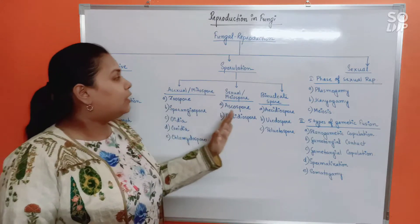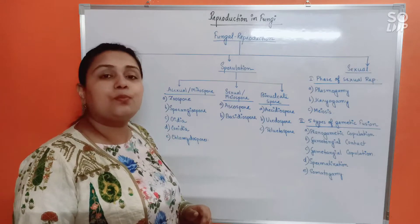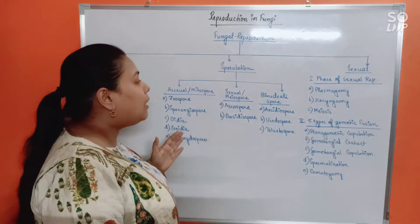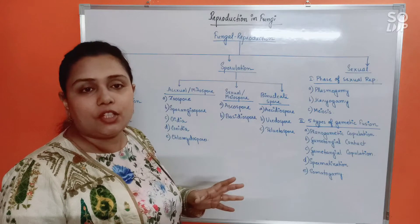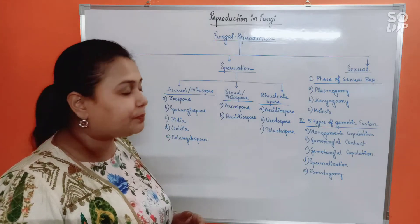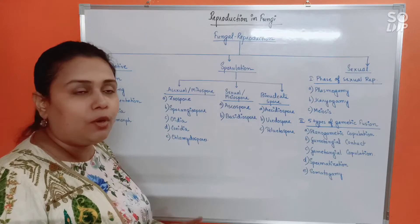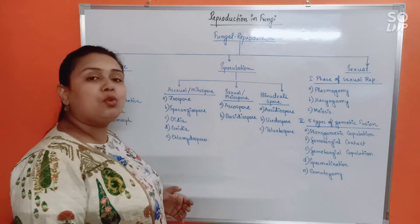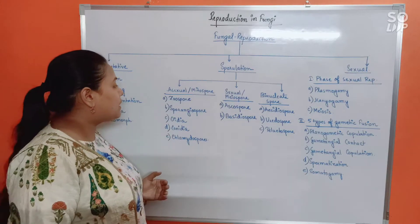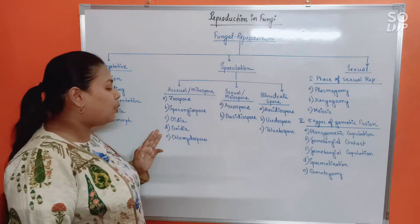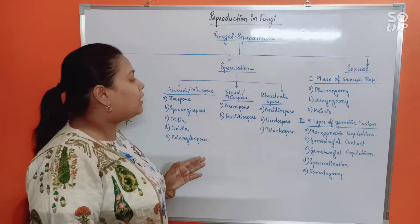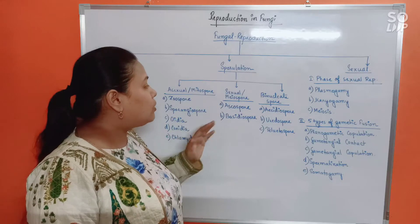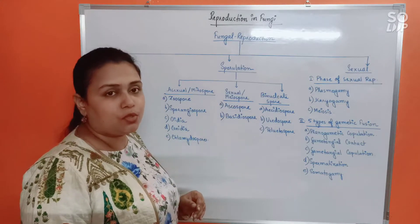The next category is sporulation or spore formation. Spore formation is the main category of reproduction in fungi, and it can be of three types because three different types of spores are born in fungi. One category is asexual spores or mitospores — spores formed by mitosis. Under asexual spores we will discuss zoospores, sporangiospores, oidia, conidia, and chlamydospores. Under sexual spores, which are born by meiosis — so we call them meiospores as well — there are two types: ascospores and basidiospores.